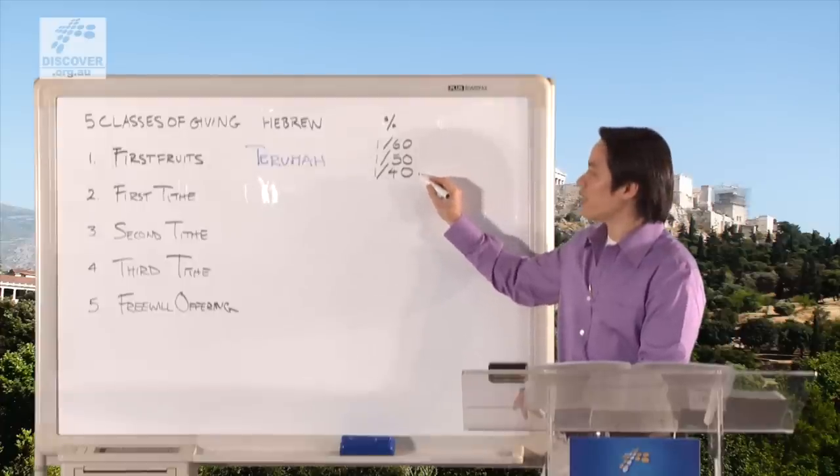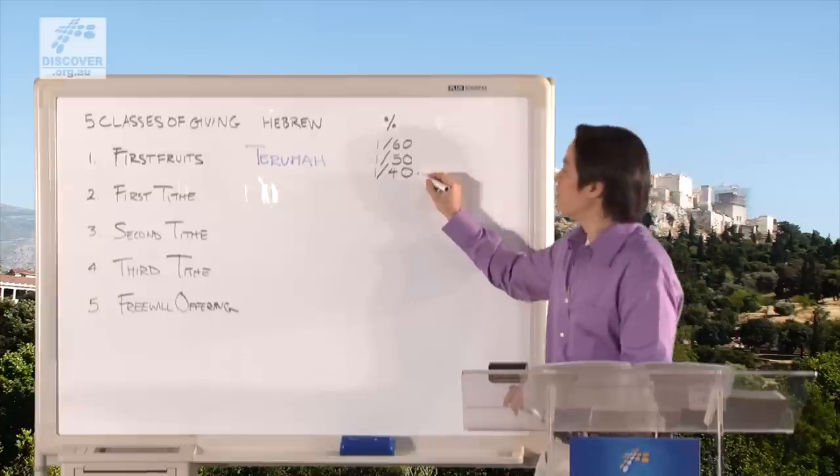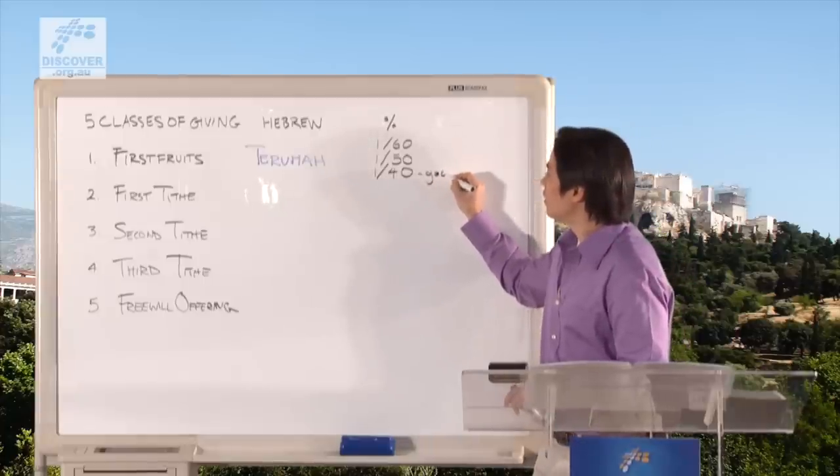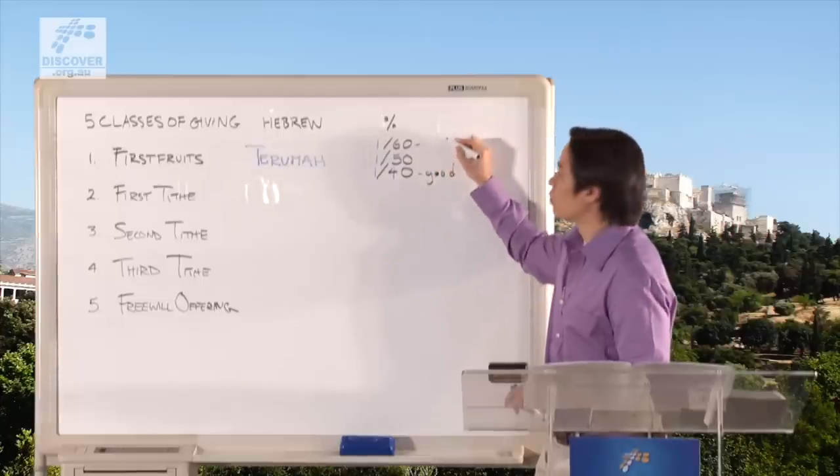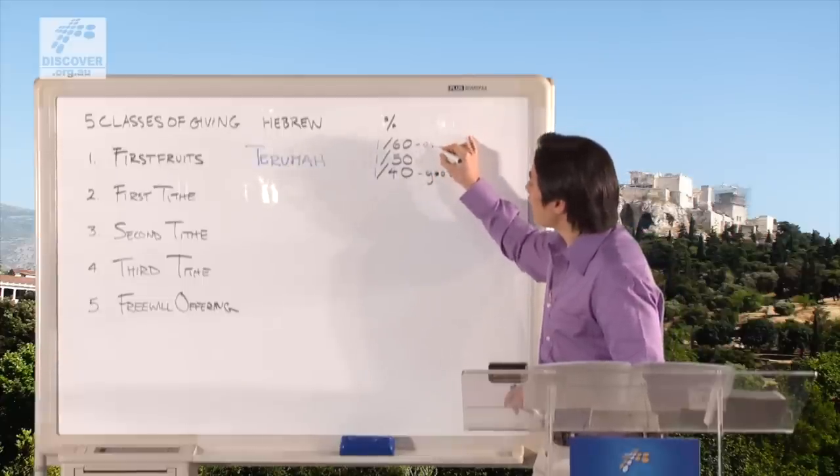This was called the good eye. And guess what? The one who would only give 1/60th of his income as Terumah was said to have